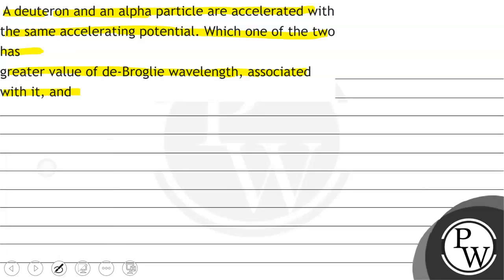So, we will solve this question. First of all, we will see what will be the key concept. The key concept in the question will be de Broglie wavelength lambda equals h by root under 2mqV.